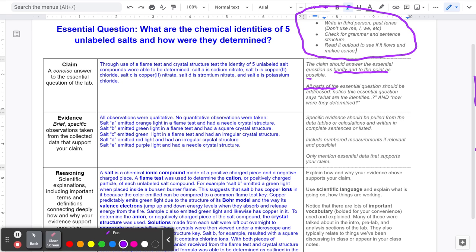Notice there's two parts there. It talks about describing what specific chemical identities of five-labeled salts are and how it was determined. So it might be a good idea to pause this video right now and take a look at this claim. See how this claim is both concise and it answers both parts of the question. Notice that this claim isn't very long. It's only about a sentence or a couple sentences.